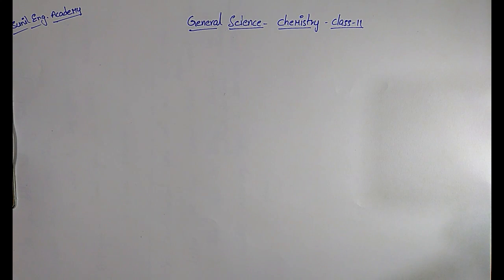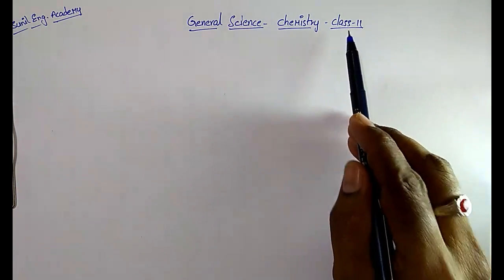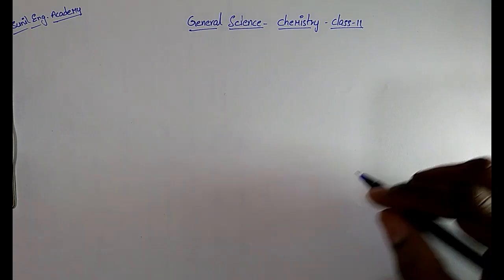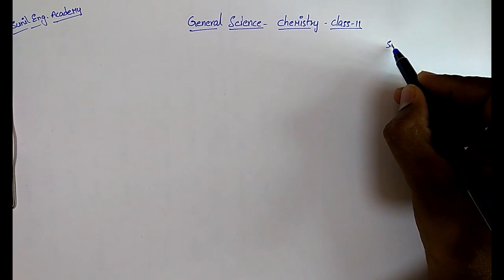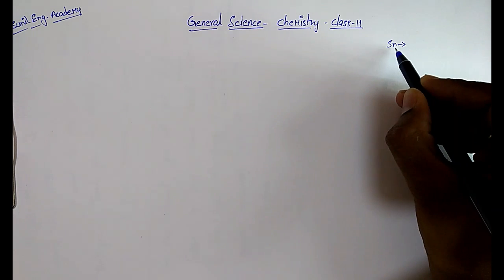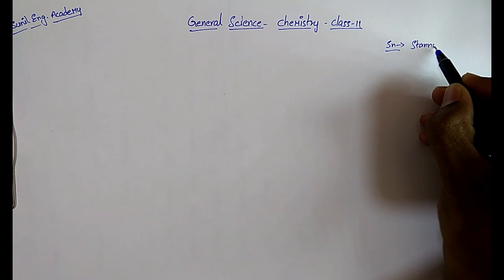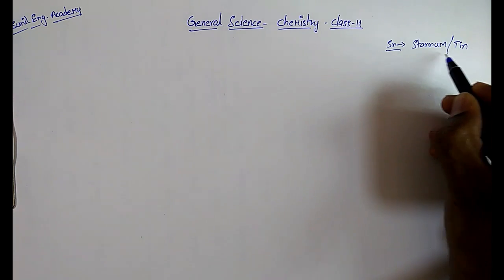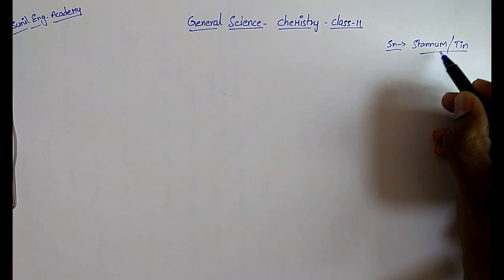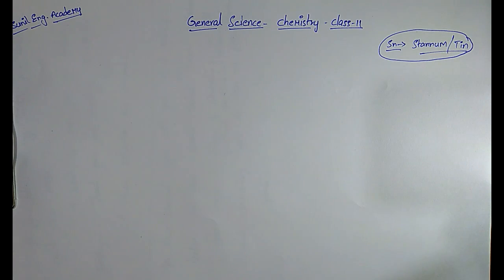Hi friends, welcome to Sunil Engineering Academy. I am Sunil. In chemistry, we have completed 10 classes; this is class 11. In the last class, I wrongly said that Sn is strontium — but Sn is stannum, also called tin. Please correct it: Sn is stannum or tin.